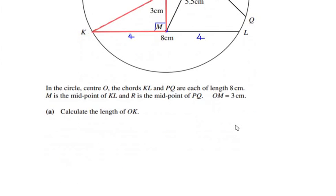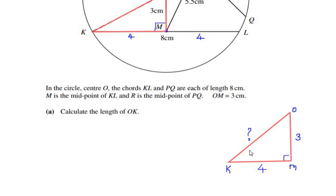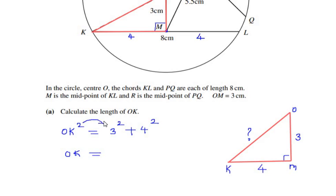The midpoint connecting to the center makes a right angle with the chord. So we have to find the value of OK: OM is three centimeters and KM is four centimeters. Using the Pythagorean theorem: OK² = 3² + 4² = 9 + 16. So OK = √25, which is five centimeters.